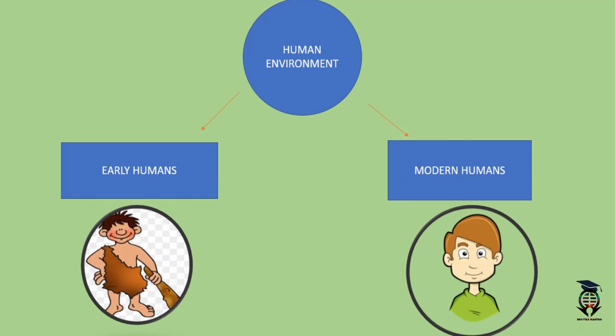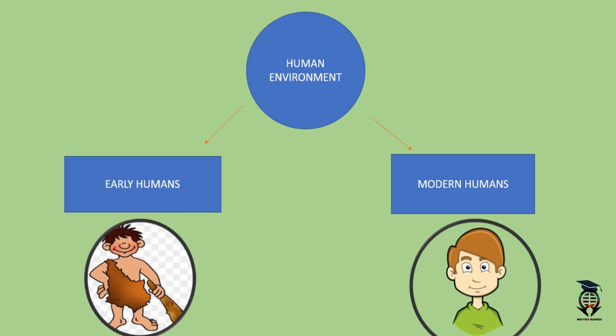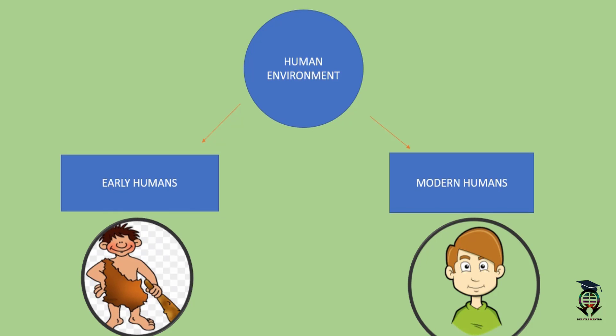Early humans lived very simple lives. They had to protect themselves from animals and learned new skills over time. Modern humans learned to use technology and make new interventions. Early humans used fire and hunted animals for food. Over time, humans made all these changes and modifications in the environment so that they could fulfill their needs in a better way.